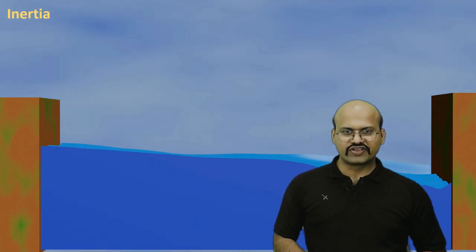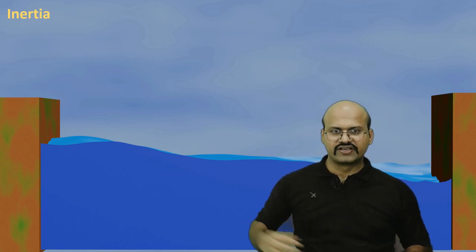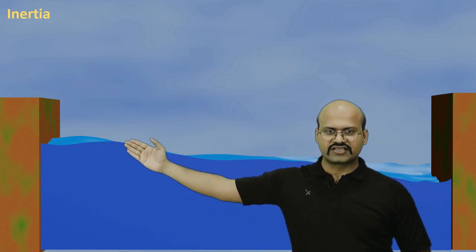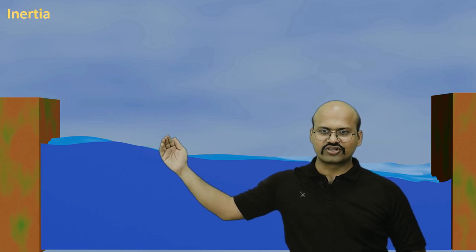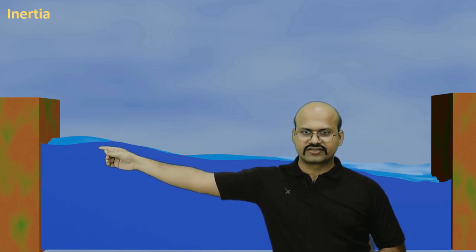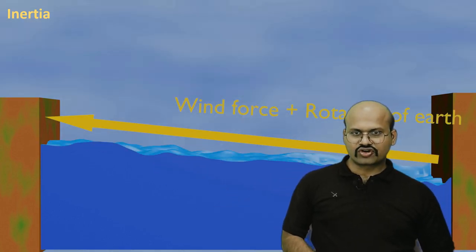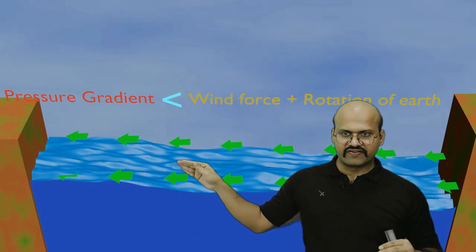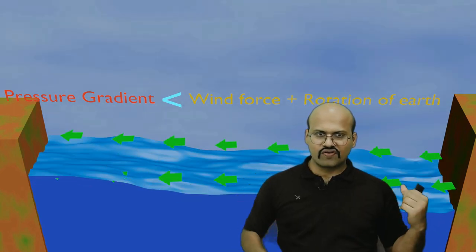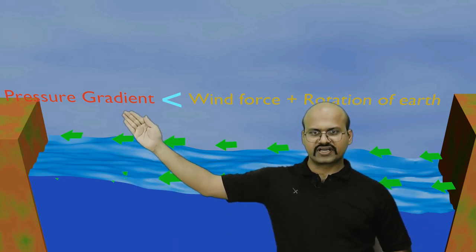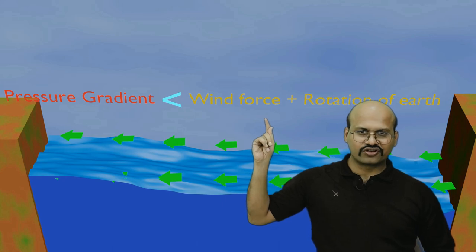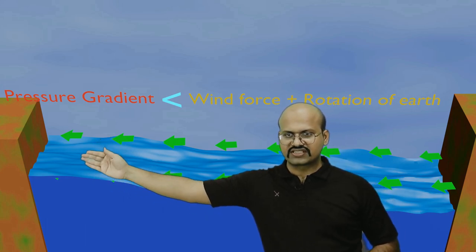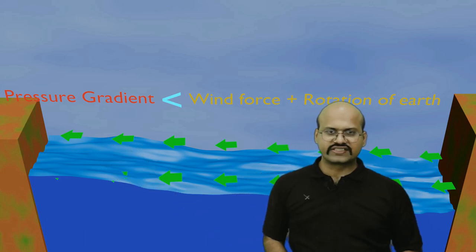Applying this to the earth: we have continental margins with ocean in between. The earth rotates in this direction and therefore inertia carries the water in the same direction. There is a lag in movement of water particles, so they accumulate on the eastern margin of continents. The forces causing this are wind force and rotation of the earth. Because of this difference in level, gravity tries to pull water from higher to lower level, creating a pressure gradient. But this pressure gradient is less than the combined force of wind and earth's rotation, and that is why water accumulates on the western side of the ocean — the eastern margin of the continents.